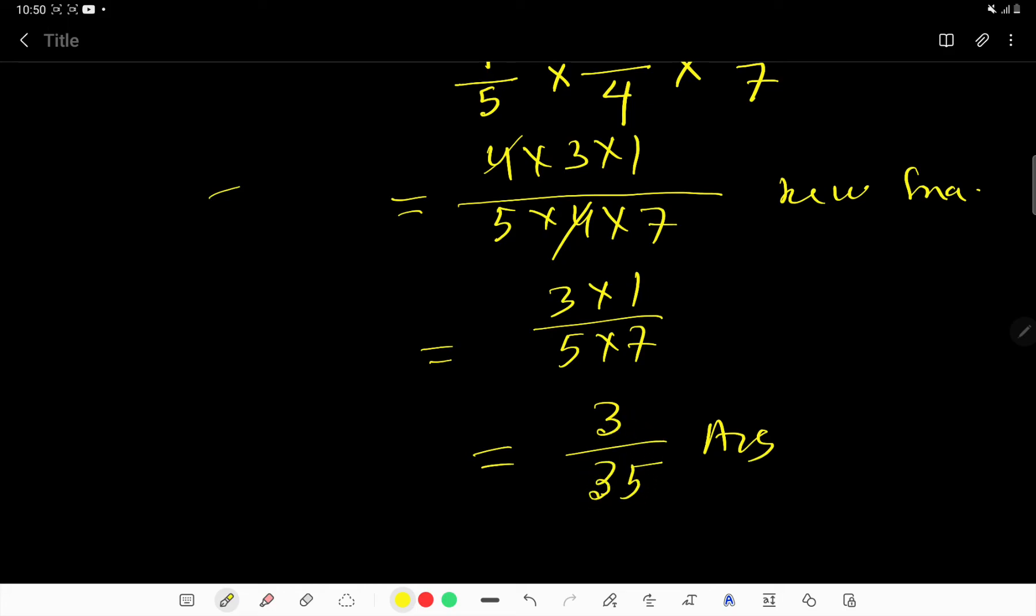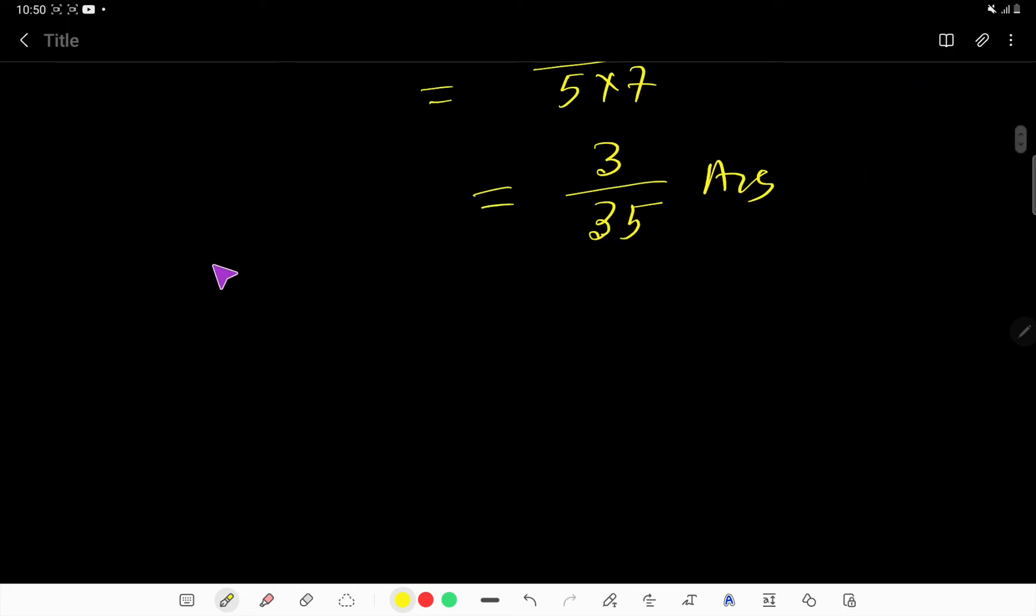Let's consider another example: 1/3 times 1/4 times 1/5. These are three fractions with different denominators. How to multiply? You have to multiply the top numbers and multiply the bottom numbers.